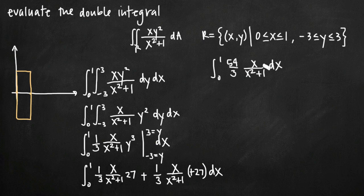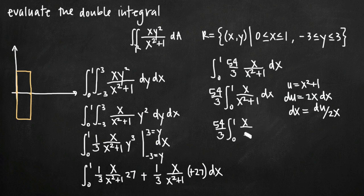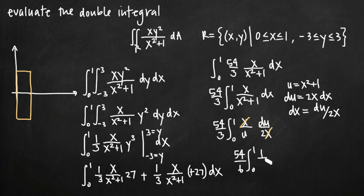Now we integrate with respect to x. We pull 54/3 out as a constant coefficient, leaving the integral of x/(x²+1) dx. We use u-substitution, setting u = x²+1. The derivative gives du = 2x dx, so dx = du/(2x). Substituting, x/u · du/(2x), the x's cancel, and we pull the 1/2 out front, giving 54/6 times the integral from 0 to 1 of 1/u du.